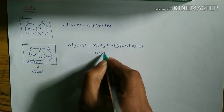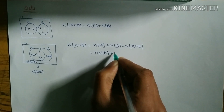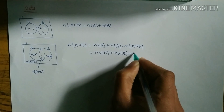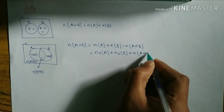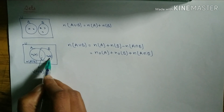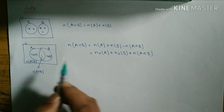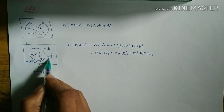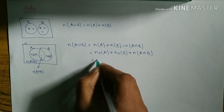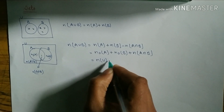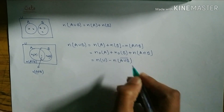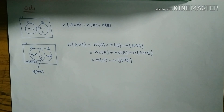Similarly, another formula of n(A∪B) is equal to n(only A) plus n(only B) plus n(A∩B). Only A is this part, only B is this part, and A intersection B is the middle part — adding these three gives A union B. Another formula is n(A∪B) equals n(U) minus n(A∪B)'. So we have three formulas of n(A∪B).